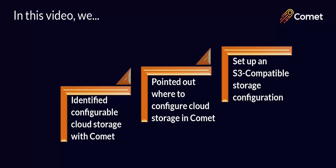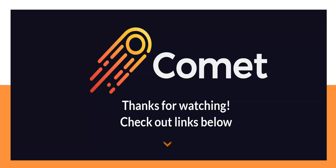And that's it. Just to recap, in this video, we've had a look at the storage options that we can configure with Comet. We also identified the spots in the client software and the self-hosted server where we can configure storage. And lastly, we trialed setting up an S3-compatible storage for a user on the Comet server. Thank you for watching. Please check out the links below to access our storage configuration guide, where you'll find more details on setting up storage with Comet. Also, please reach out through our website for inquiries or feedback. We'd love to hear from you. See you in the next video!